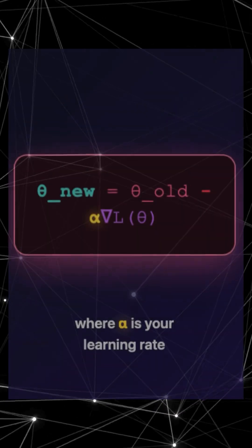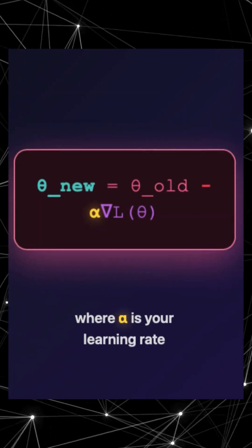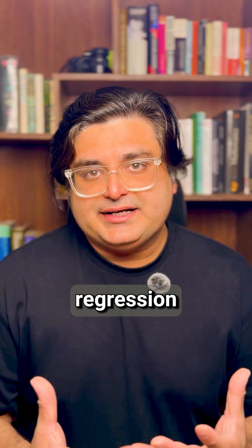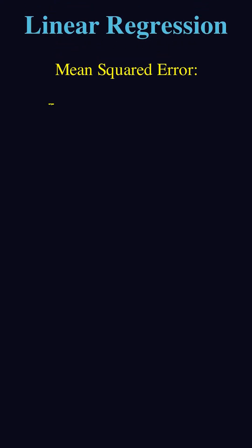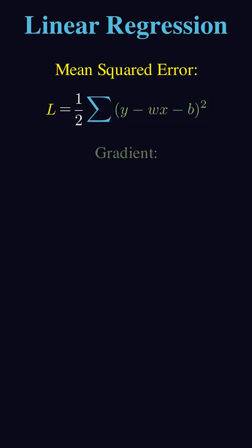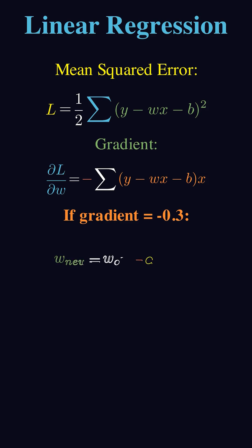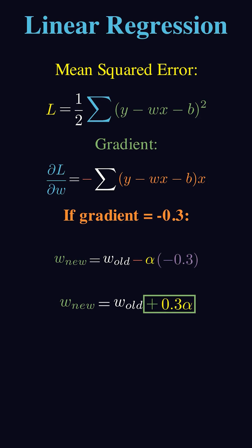Each step follows this rule, where alpha is your learning rate and theta are your parameters. Take linear regression with mean squared error. The gradient with respect to w is given by the partial derivative of this loss function. If this equals minus 0.3, we update our weights like this. We are literally climbing downhill on this loss surface one calculated step at a time.